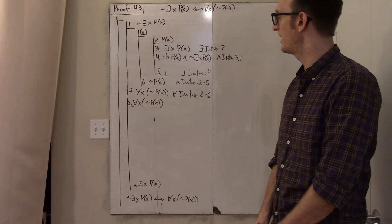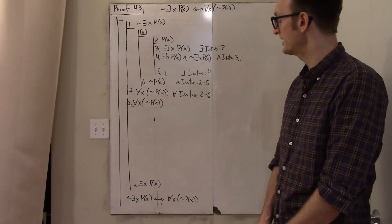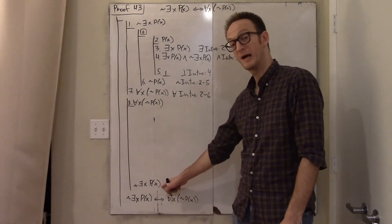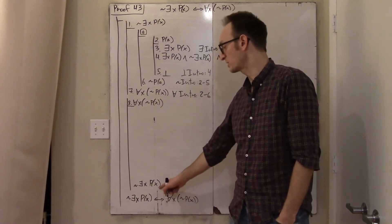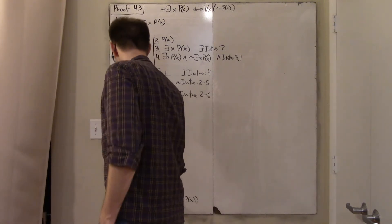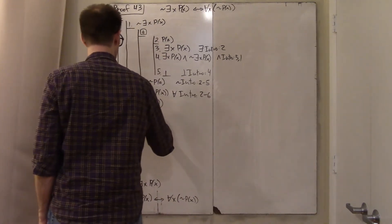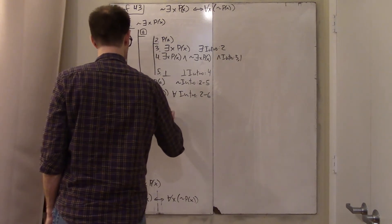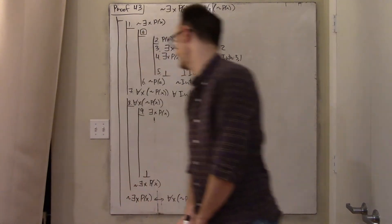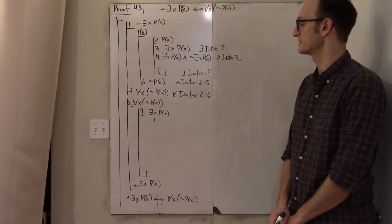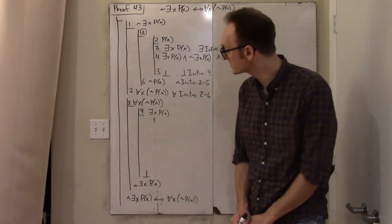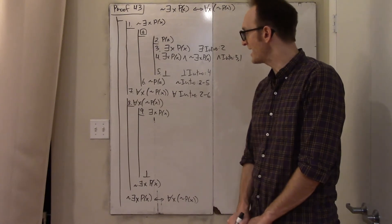Now let's go in the other direction. The main connective is a negation — it's not the case that there exists a P. So the clear thing to do is suppose that there is someone with property P and arrive at a contradiction. I have lines eight and nine to work with.